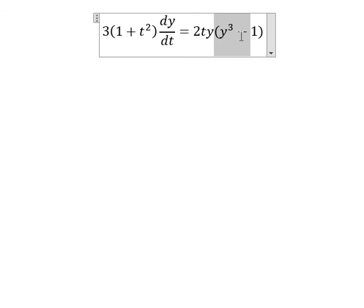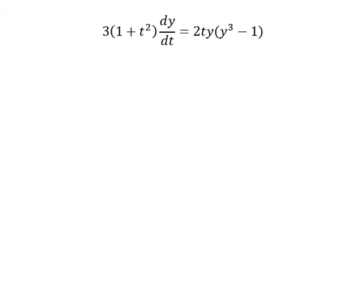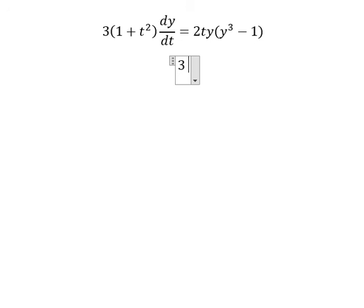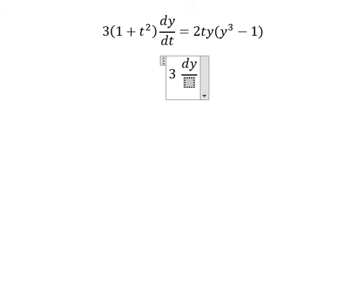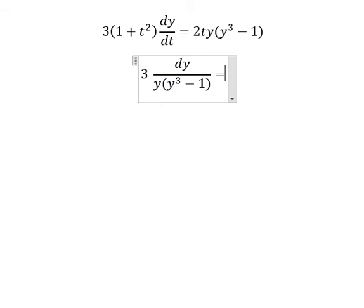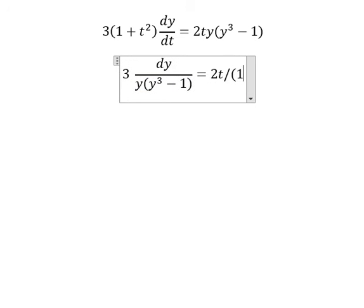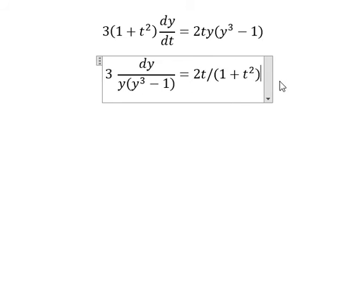y and y to the power of 3 minus 1 will go to the left. 1 plus t squared will go to the right. So we will have dy over y multiplied by y to the power of 3 minus 1, and 2t over 1 plus t squared dt.